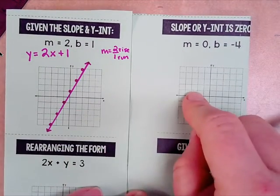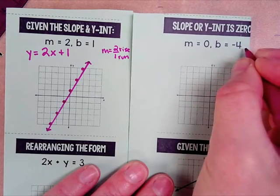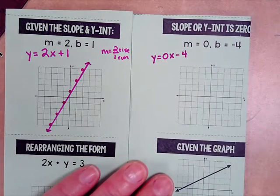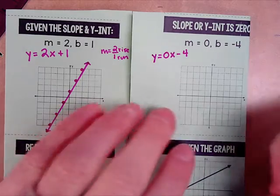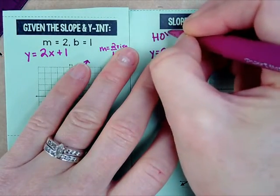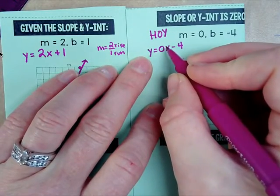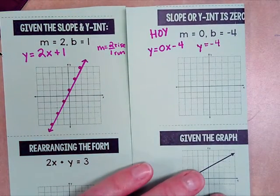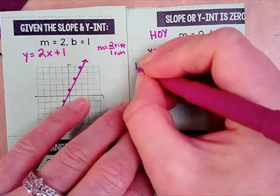Let's go to the one on the right — the slope is 0 and the y-intercept is negative 4, so I'm going to write the equation y equals 0x minus 4. Anytime you have a 0 or undefined slope, think back to HOI or BOX. HOI is because it's 0 slope, so if it's y equals a number it's a horizontal line. I'm going to rewrite this as y equals negative 4.